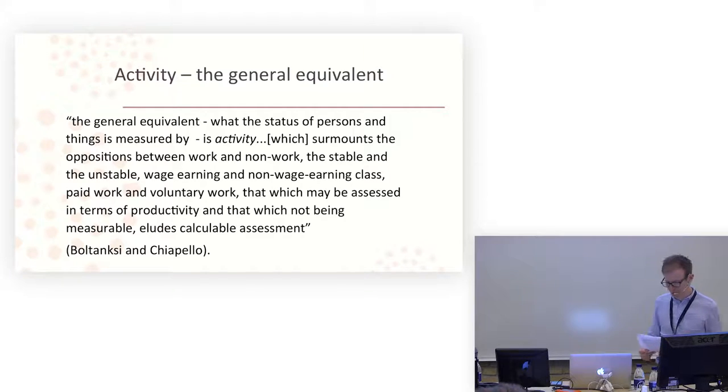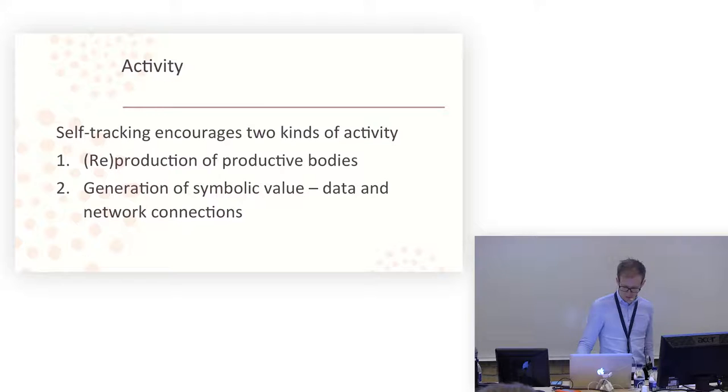So emotional labor, social networks, the relationships between people are all central to the productive processes. And I think self-tracking is one means of enabling the appropriation of this, of all these different aspects for capitalism. So I'm going to suggest two ways in which activity has become valorized and then self-tracking enables and encourages activity. So the reproduction of productive bodies and the generation of symbolic value, data and network connections and various other things. So I've seen these both as types of activity, as physical movement and also the production of kind of symbolic things.